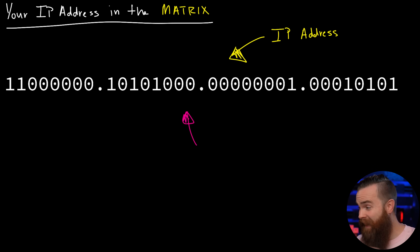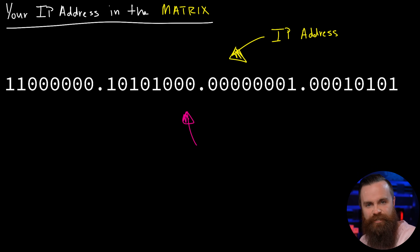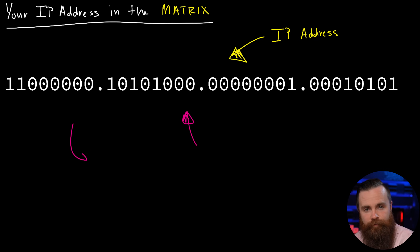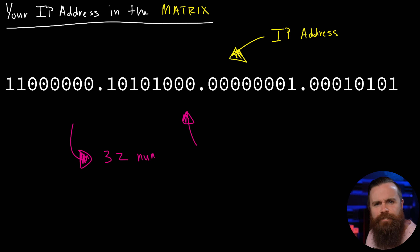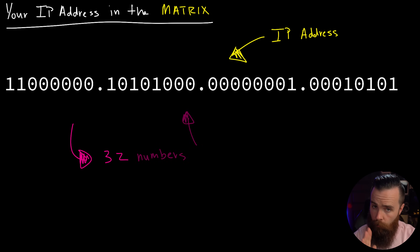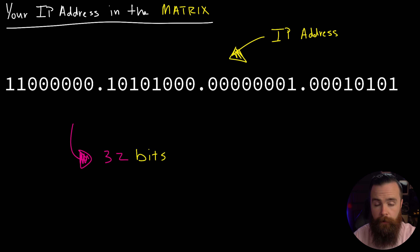First, I want you to count how many numbers there are here - how many digits. Go ahead and count right now, pause the video. How many were there? 32. There are 32 numbers here, or we could also say 32 bits.